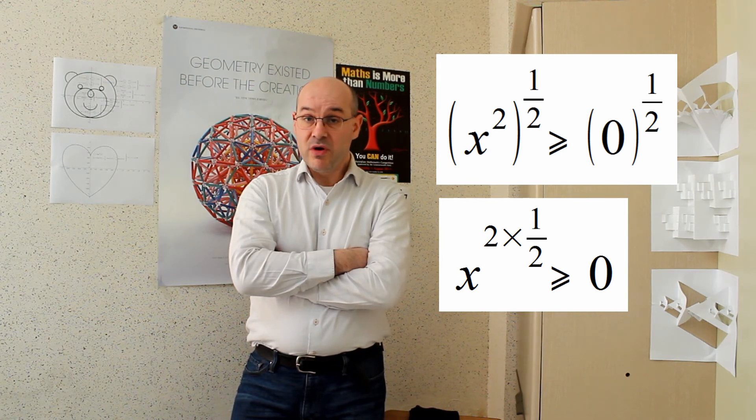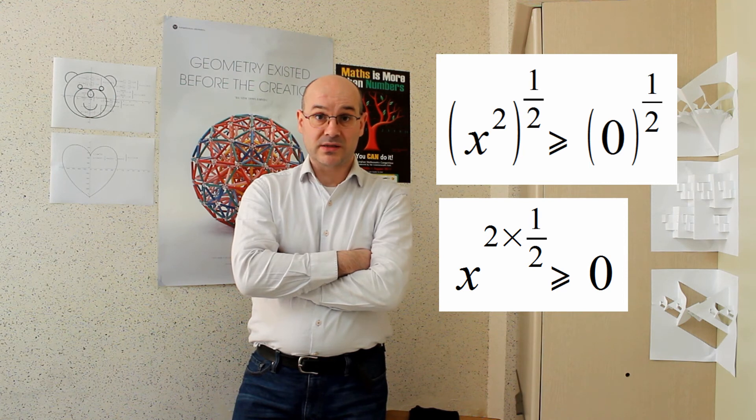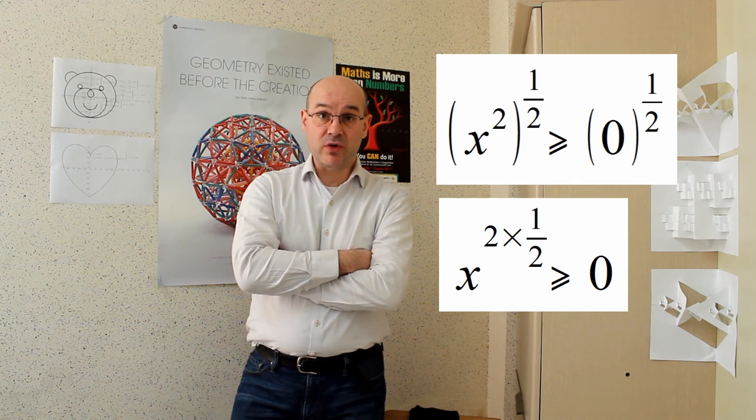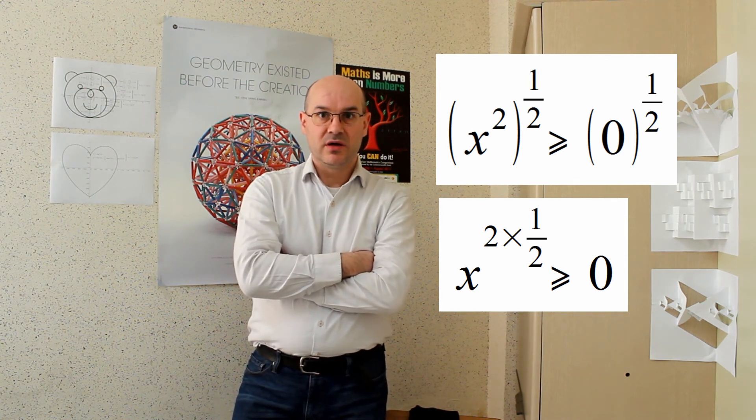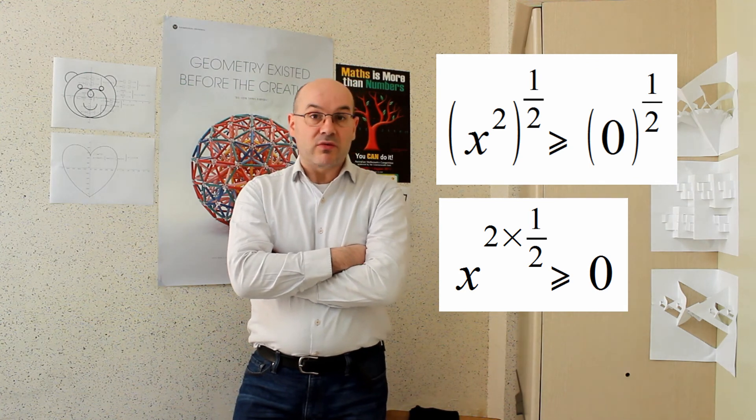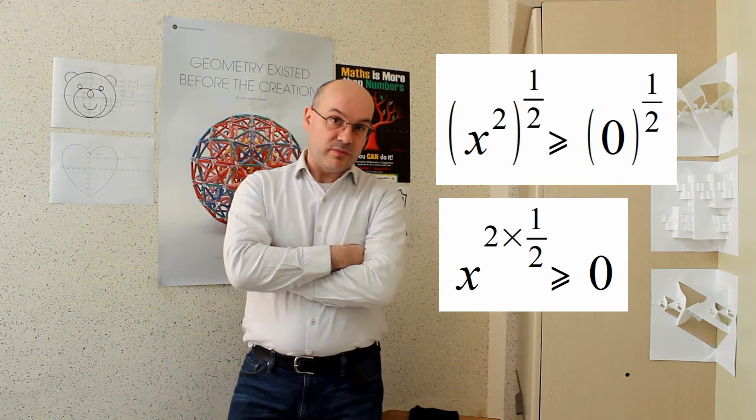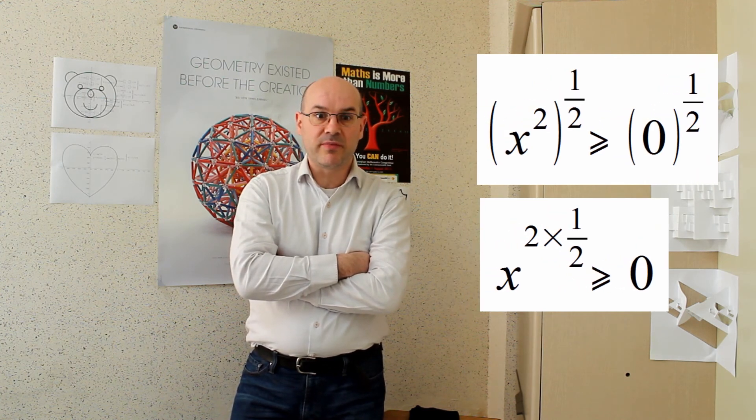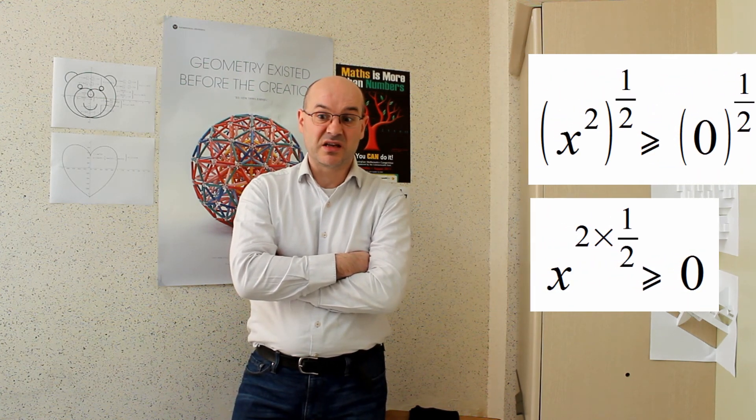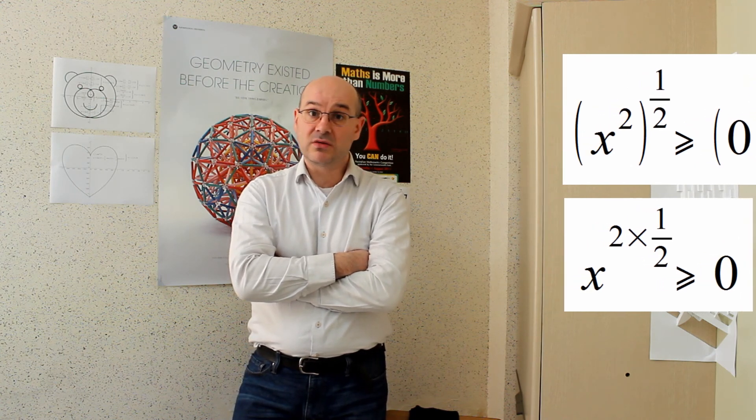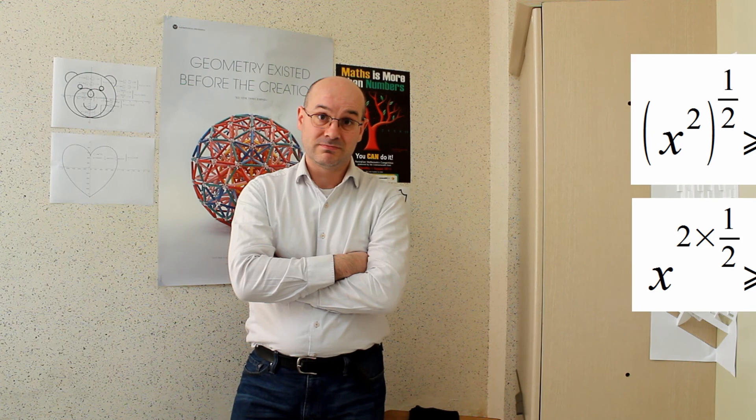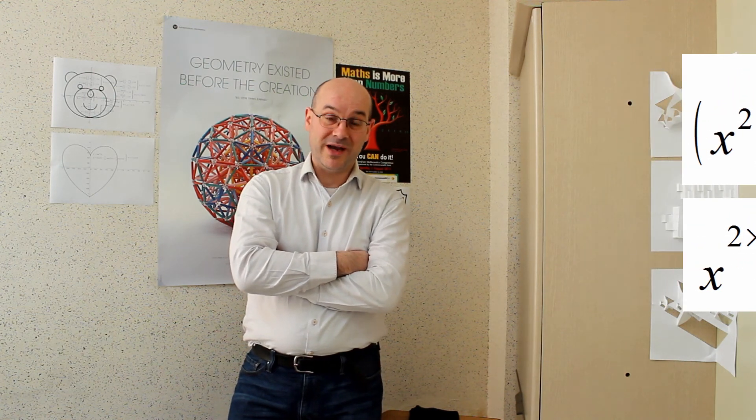So if I remove the brackets to the exponent, I change the domain where I use the square root, or the power of a half. Because before, I used the square root of a square number, which is a positive number, no problem. And suddenly, I remove the parenthesis, or the brackets, and then I get the square root of something that could be negative. And I don't have the right to do that. So that was the mistake I made.